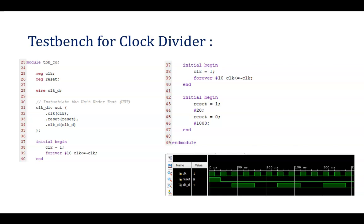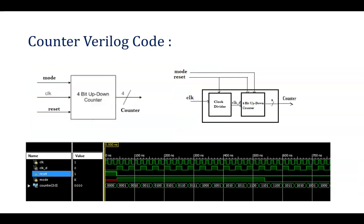In today's session, we will be moving ahead with the counter. Here is the counter which is a 4-bit counter having clock as an input, reset as another input, and mode which converts the counter from up to down. If mode is 1 it will be counting up, and if mode is 0 it will be counting down. The output, that is the counter, is of 4-bit. This is a 4-bit up-down counter.